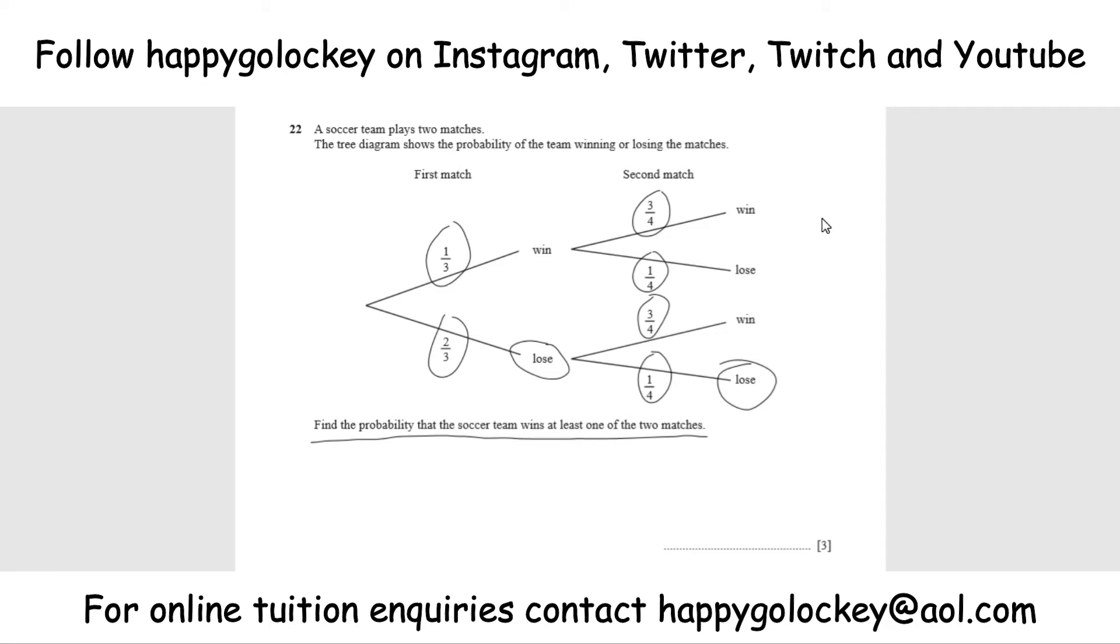The other way to do it is to work out all the options: win-win, win-lose, lose-win, and add those three together, and just don't include the lose-lose. So a bit of common sense tells me we're going to do just lose-lose, as that's the only one that we don't want, and then we'll take that away from 100%.